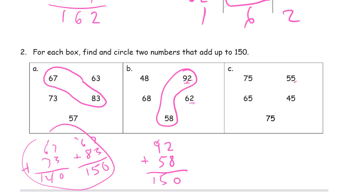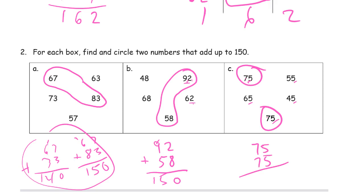The last box — these all end in fives. Two fives will make a ten, so we need the tens digits to add up to fourteen, because fourteen tens plus one more ten from the ones makes fifteen tens — one hundred fifty. Seven and six is thirteen, won't work. Seven and seven is fourteen — that works! So we need seventy-five and seventy-five. Don't forget to show those marks when using the vertical method. Fourteen and five is fifteen — a hundred fifty.